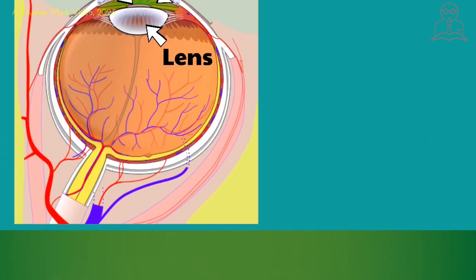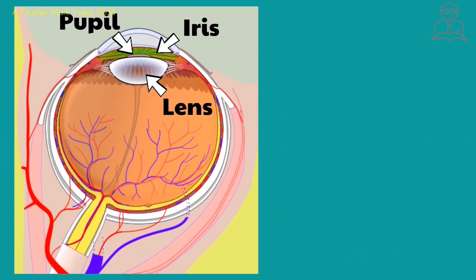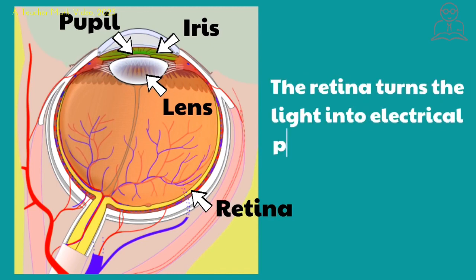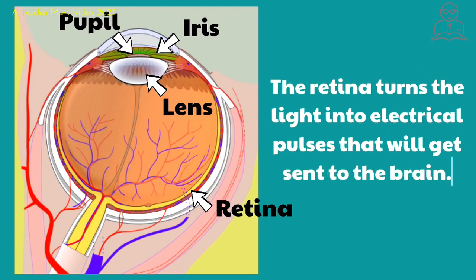The final part of the eye we're going to learn about today is called the retina. The retina is in the back of the eye. The retina turns the light into electrical pulses that get sent to the brain. The light that was focused by the lens goes to the retina, where it turns into an image. That image is sent through electrical pulses, and then your brain figures out exactly what you are seeing.